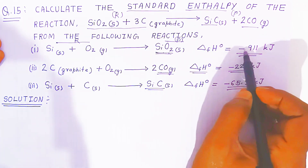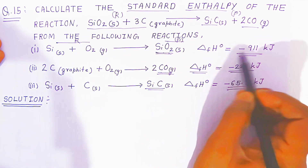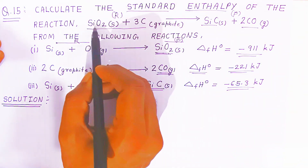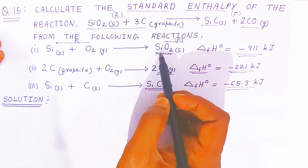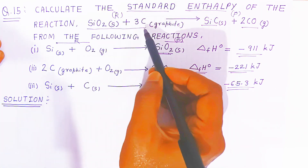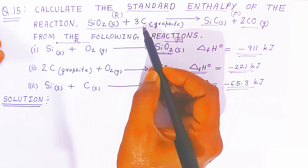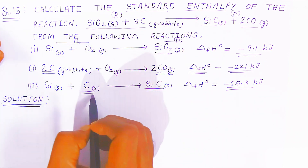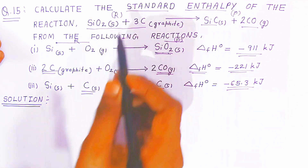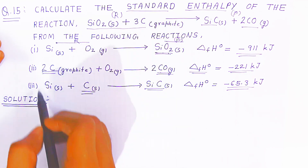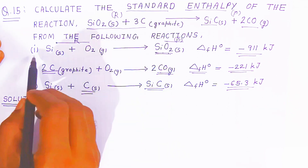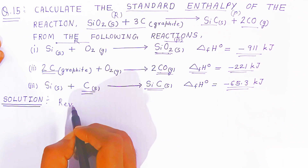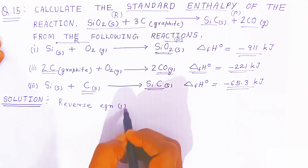When you reverse equation number one, you also have to reverse the standard enthalpy of formation — it was minus 911 kJ, so it will become plus 911 kJ. Now check the second reactant: carbon. You need three carbons. Carbon is already present on the reactant side of reactions two and three, so no need to reverse those reactions. You only need to reverse reaction one.